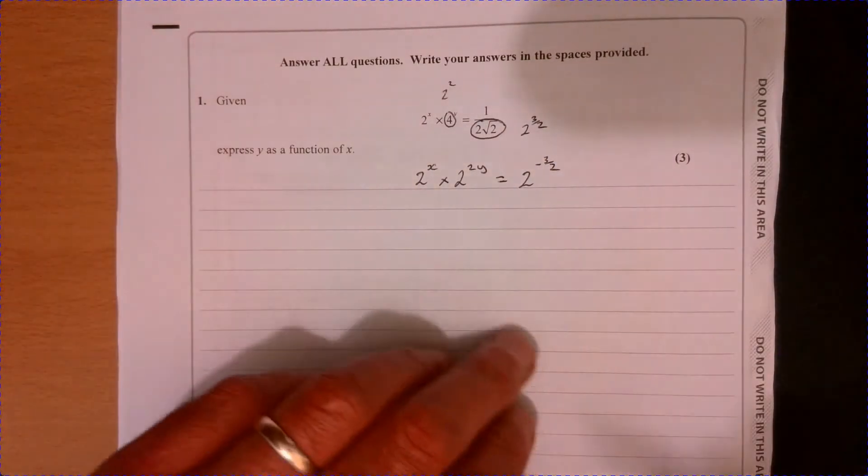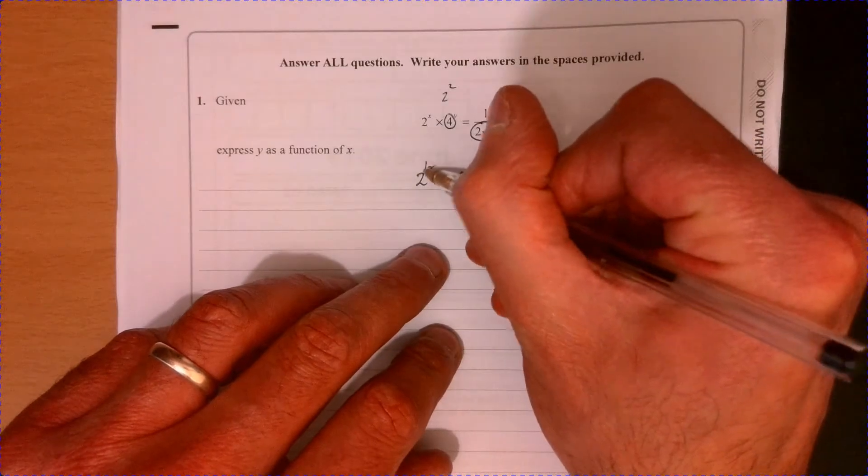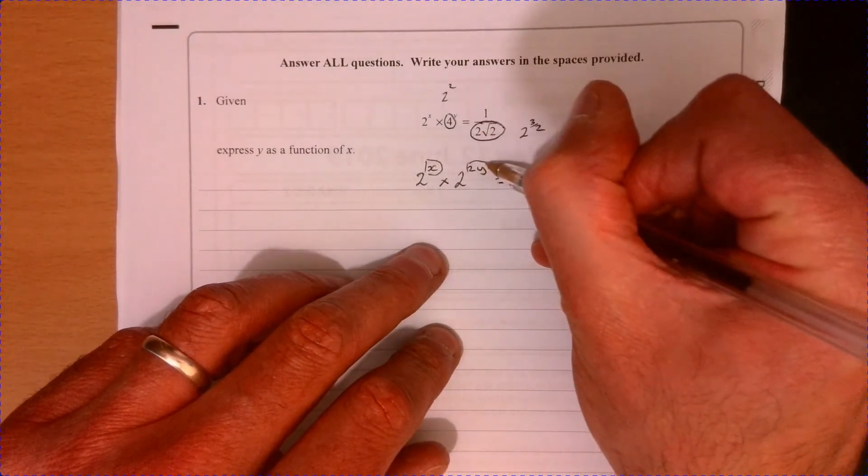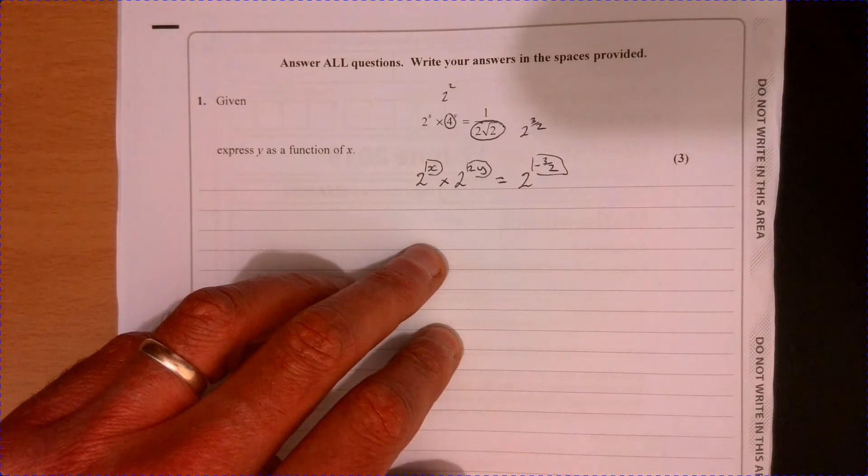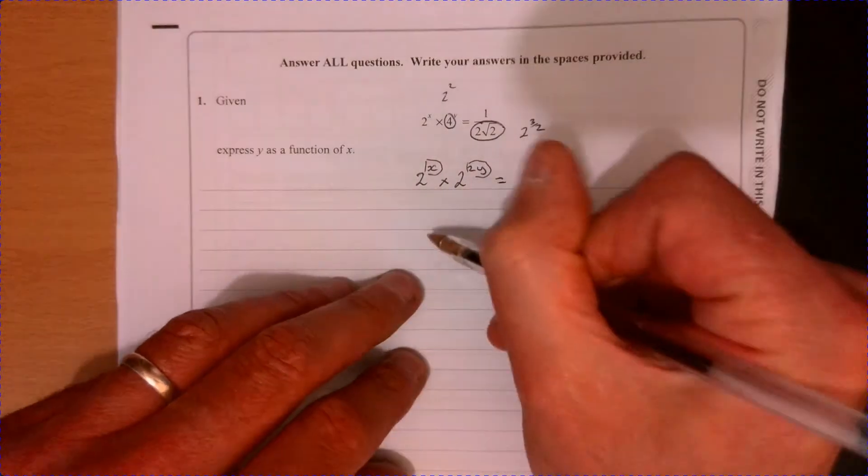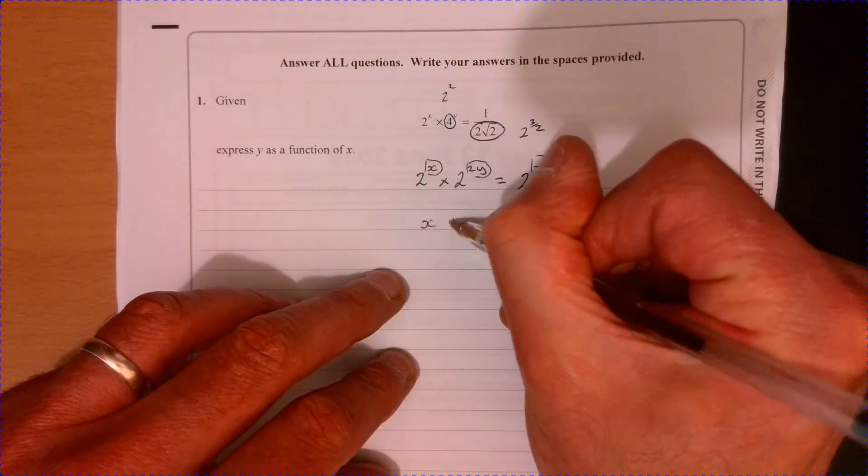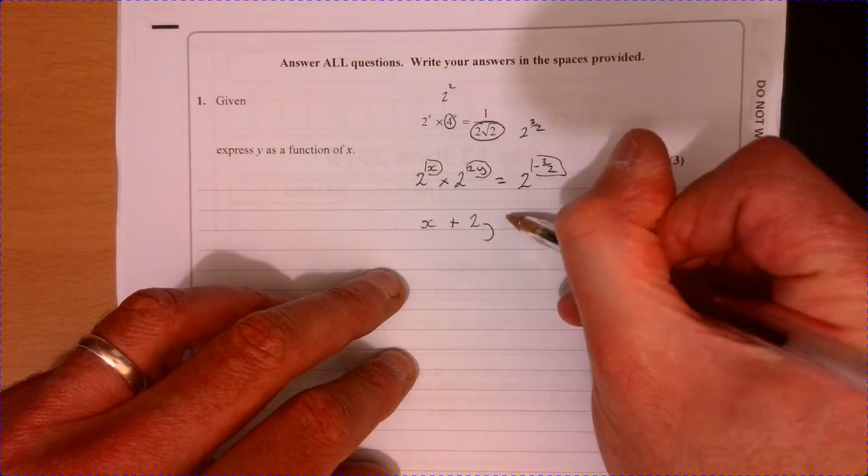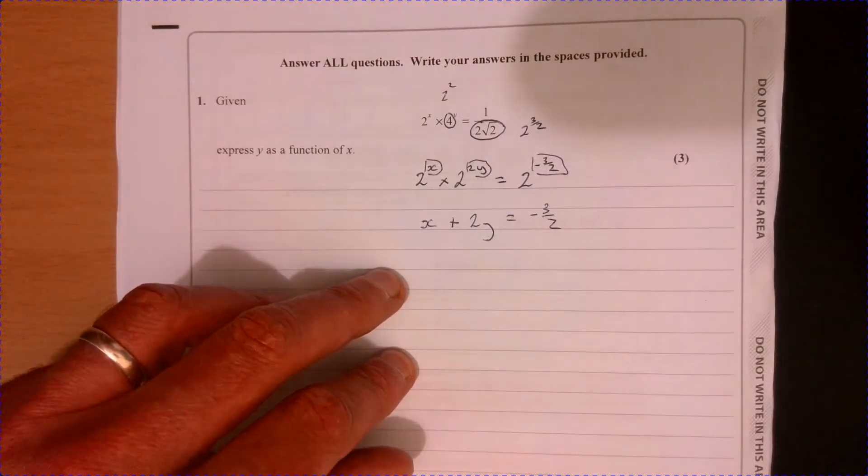So just using our basic rules of indices, we should know that this and this equals this because we're multiplying together here. So we can now write x plus two y equals minus three over two.